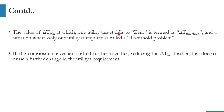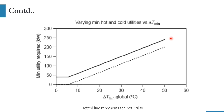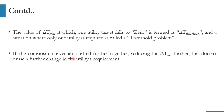The value of delta T minimum at which one utility target falls to zero is termed as delta T threshold. If you are given a system and asked to calculate the delta T threshold, it corresponds to that temperature at which one utility requirement becomes zero and the other becomes constant — as visible in the graph. Importantly, if the composite curves are shifted together reducing delta T minimum further, this does not cause a further change in utility requirements. Also, there is no above and below pinch in a threshold system — you do not have to divide the system because there is no pinch temperature in the threshold problem.